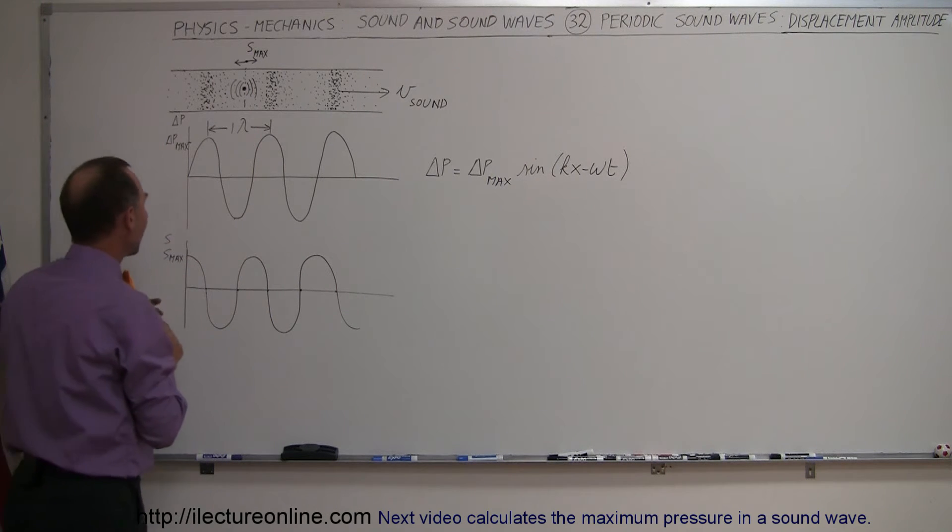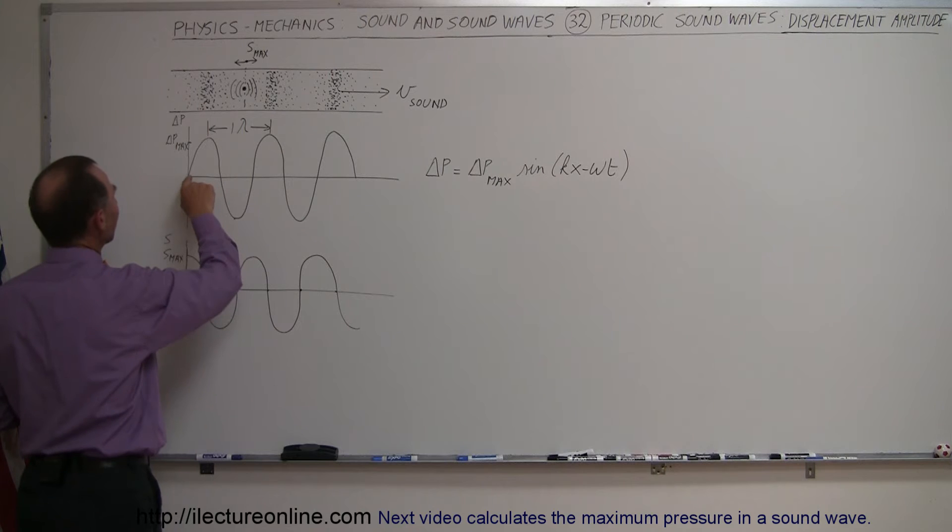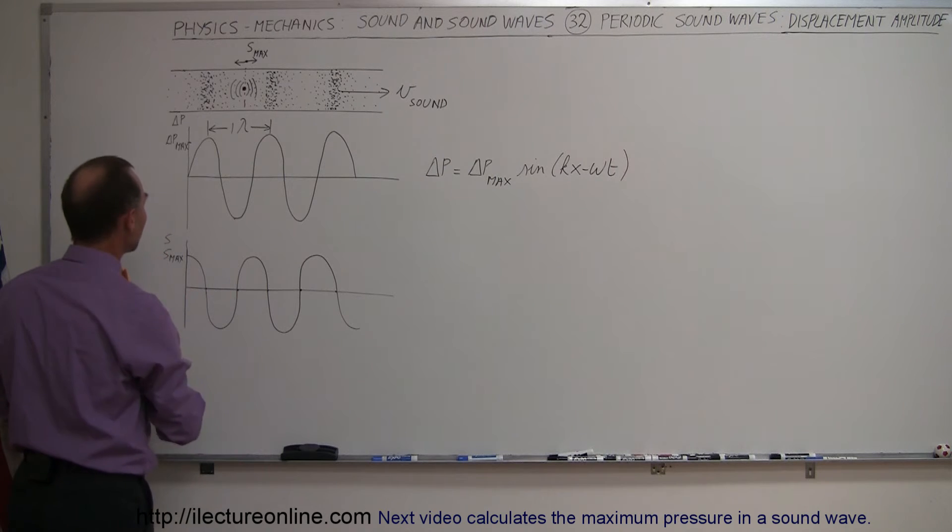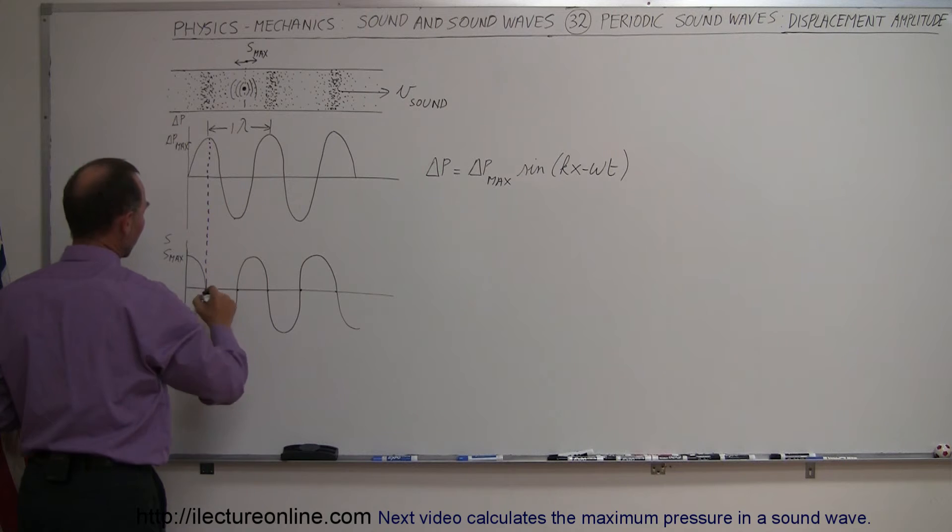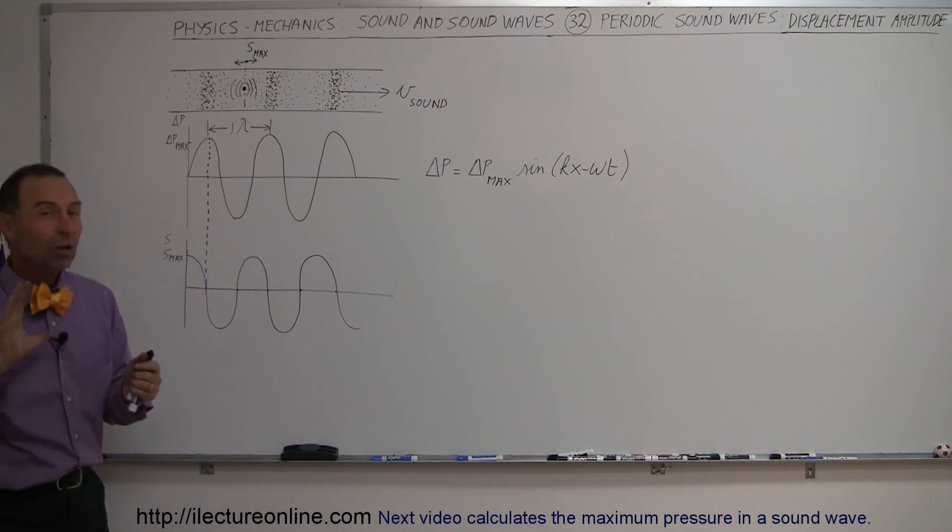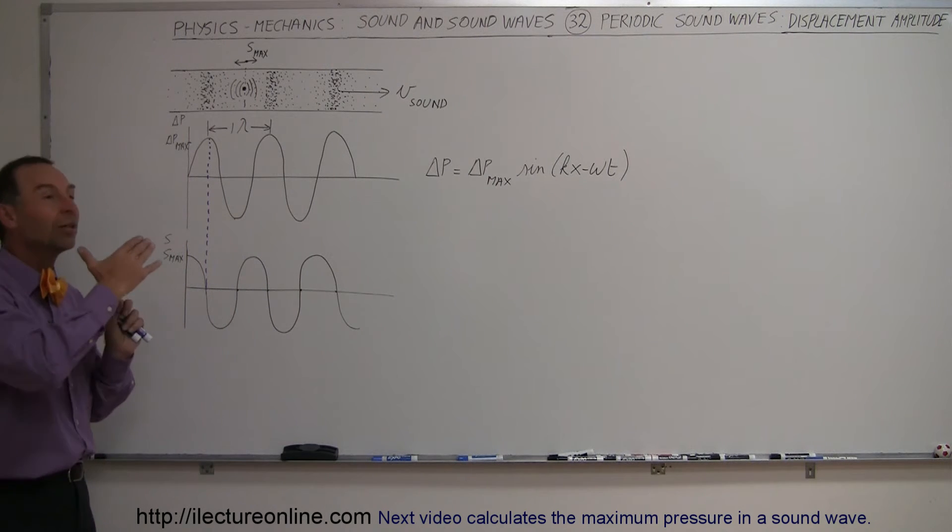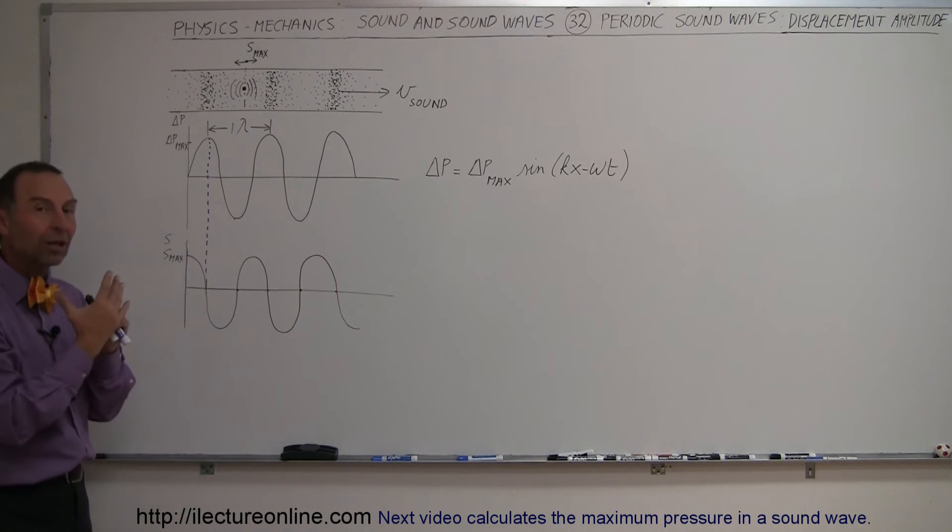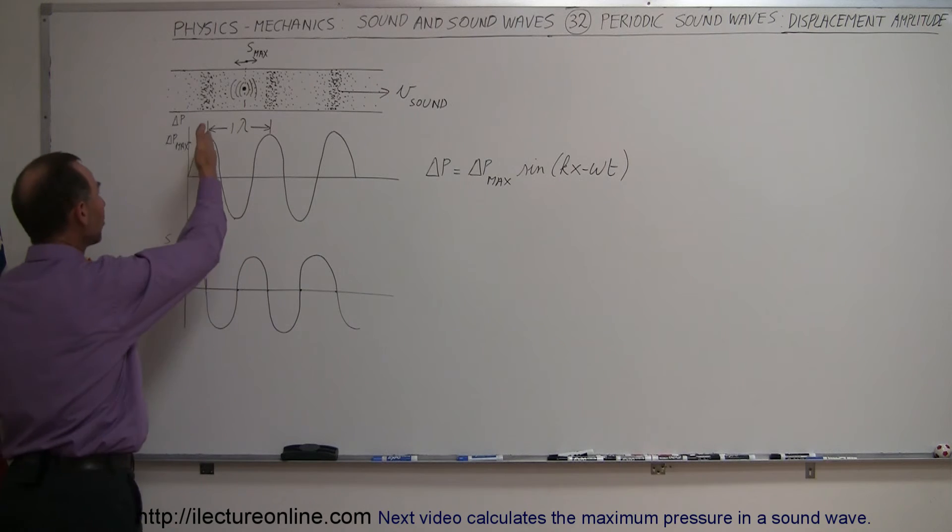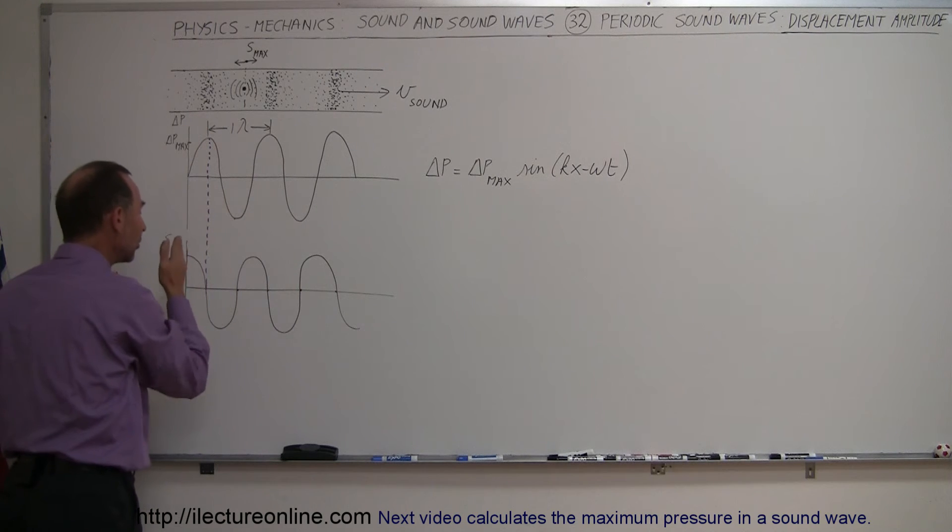And what it turns out, that at the moment that the pressure wave reaches its maximum amplitude, at that very same point, and let me draw the line so you can see it, the displacement goes to zero. So what happens is, first the molecules are displaced, and then they build up the pressure. As they build up the pressure, the molecules get pushed back into their normal position, so when the pressure is at its highest the molecules are back in the normal position.